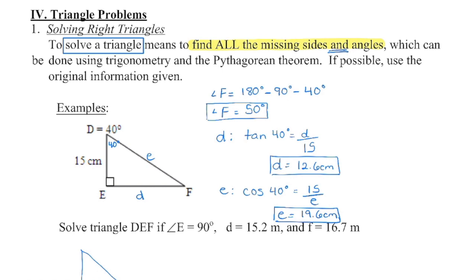I now have two side lengths that I have to find. I can't use Pythagoras' theorem because in order to use that theorem, I need to know two of the sides — I only know this one side. We have to go to the primary trigonometric ratios. Using the original information given, because this is the original angle — try to go with this one.